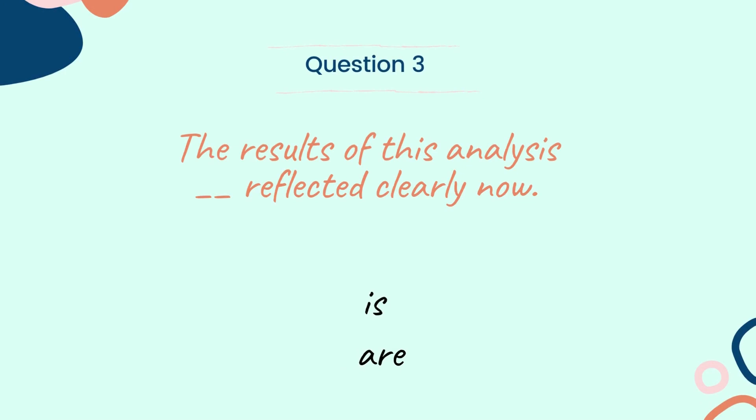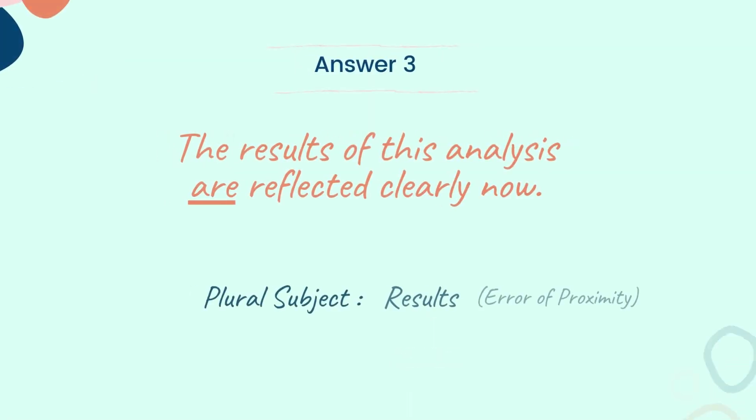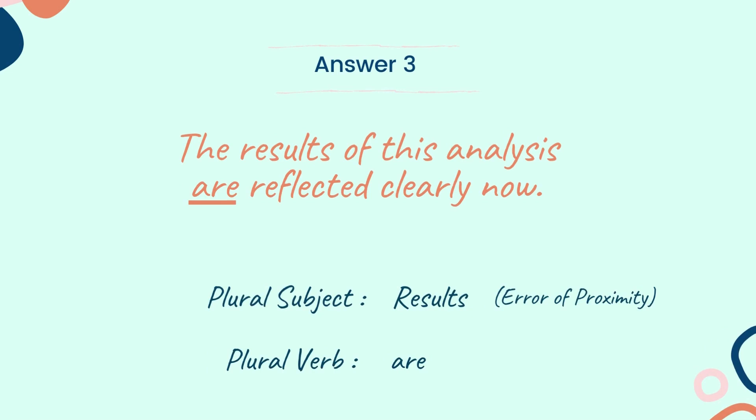Let's look into the next question. Question 3: 'The results of this analysis dash reflected clearly now.' Choose the correct verb between the two words: is and are. And the answer is: The results of this analysis are reflected clearly now. Here the subject 'results' is plural, so the verb 'are' is also plural. This solution also reminds us of the concept of error in proximity.